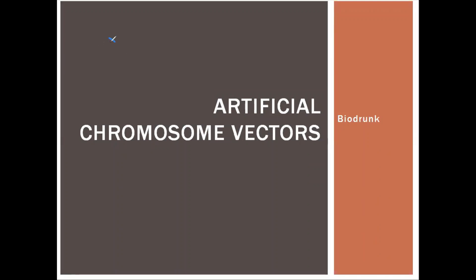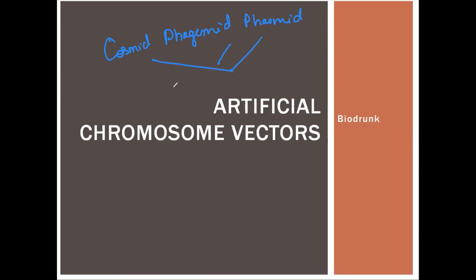In the previous video, I told you about Cosmid, Pagmid, and Phasmid. Cosmid, Pagmid, and Phasmid are a combination of Plasmid and Bacteriophage Vector or Lambda Vector.